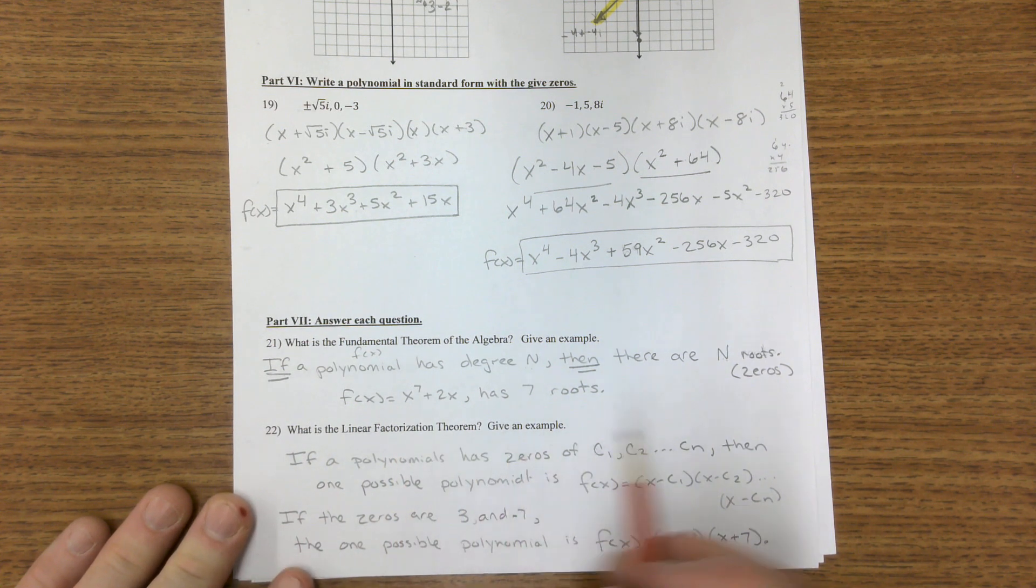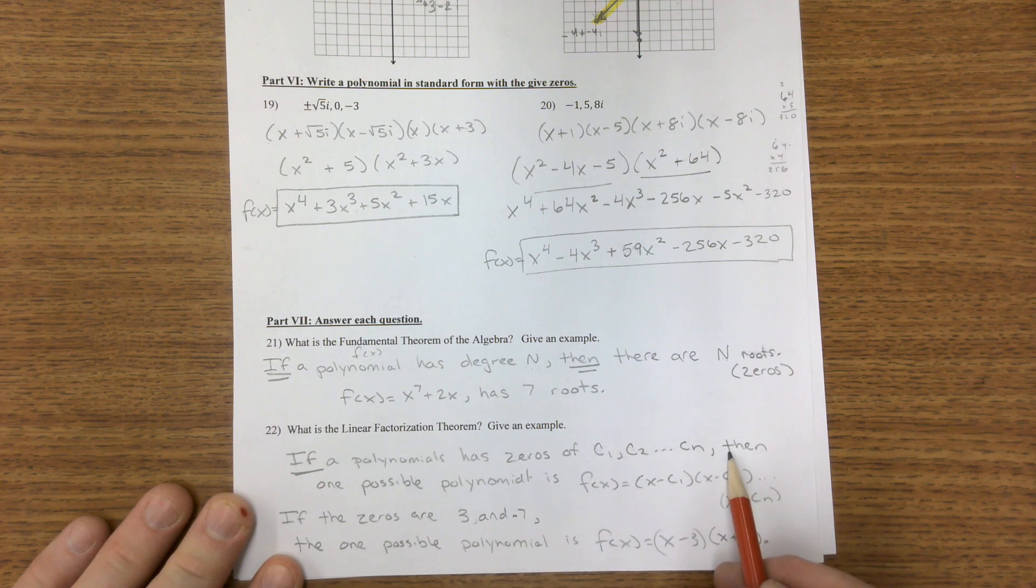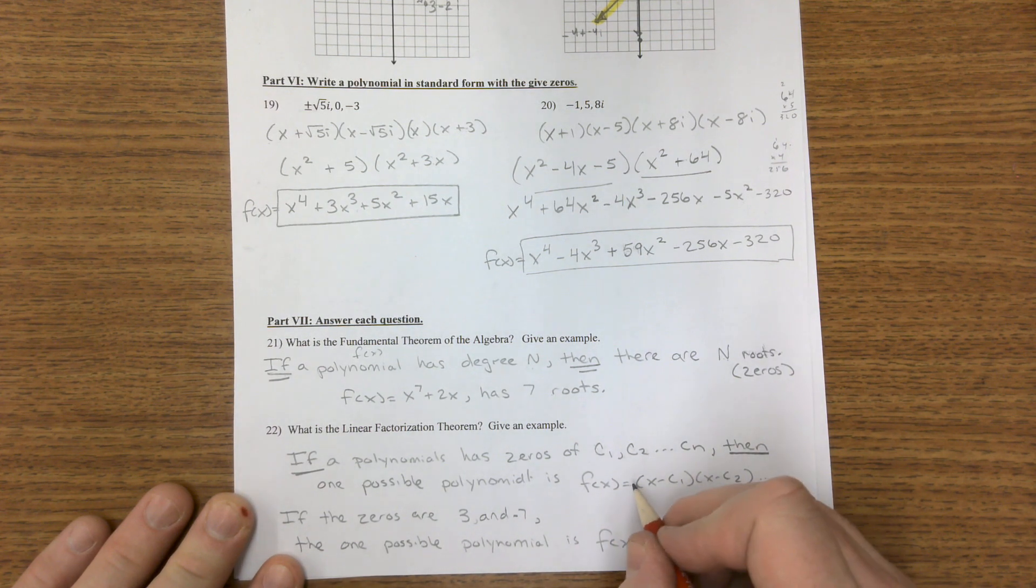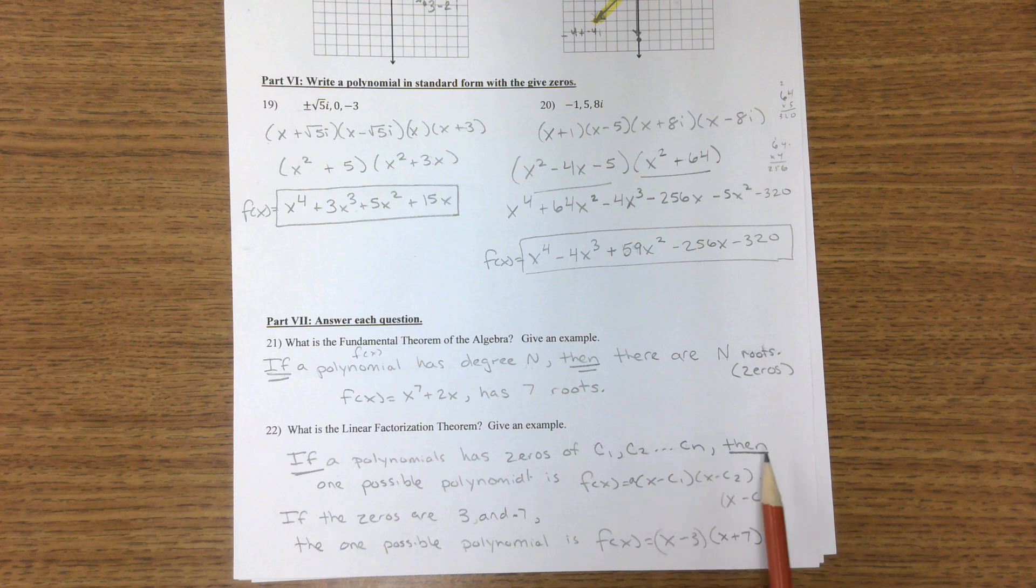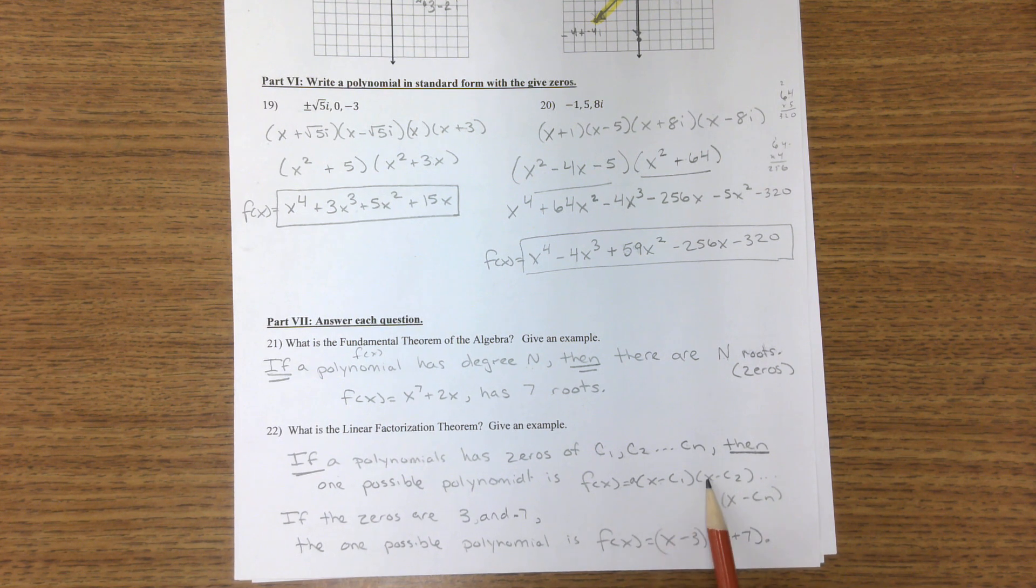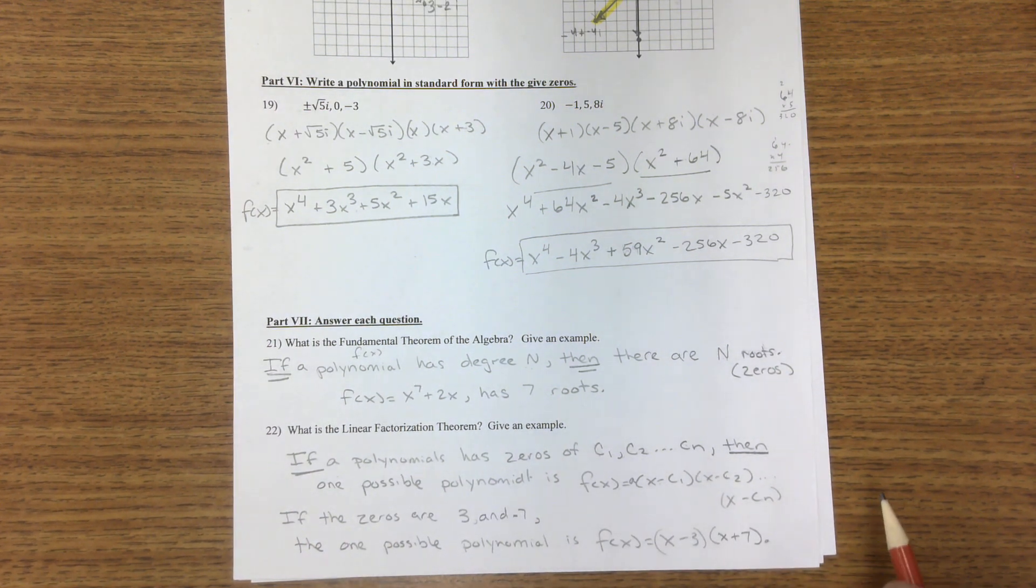Linear Factorization Theorem. If it has these zeros, then this is the solution. Don't forget we can stick an a in there, just an amplitude, a constant. But if these are the solutions, then this is the equation: x minus, x minus, x minus, all the way till the end. So when you're thinking of the theorems, always try to remember, think of them as if-then. If degree n, then n roots. If these solutions, then it's written like this.